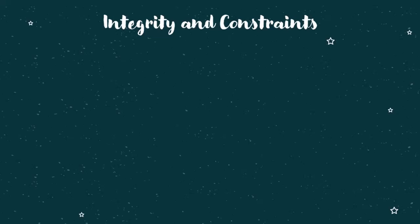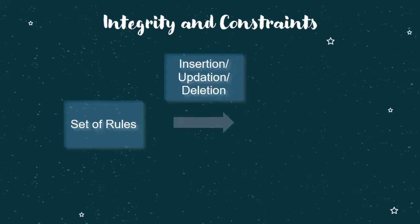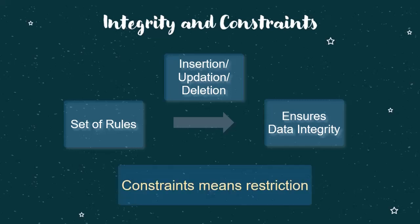In today's video, we are going to learn about Integrity Constraints. Integrity Constraints are a set of rules which ensure that data insertion, updation, and other processes are performed in such a way that data integrity is not affected. In other words, Integrity Constraints are rules that ensure we insert proper data in our database when we insert, update, or delete.